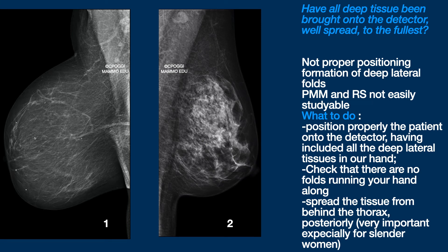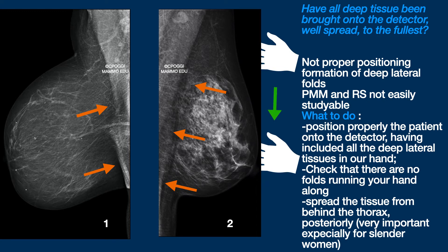If you have not been successful in taking all the lateral tissue in your hand, or if folds are formed between these tissues and the detector, these folds can be very important, as you can see here. Reading the retromammary space is not easy when folds are present, so folds like that are to be eliminated. We have to pick all lateral tissue up in our hand and check that no folds are formed behind the breast — the lateral part resting on the detector — running our hand along the superior and inferior direction. Then we have to smooth the tissue behind the thorax, posteriorly. About artifacts, you can find a series of four videos on this channel.